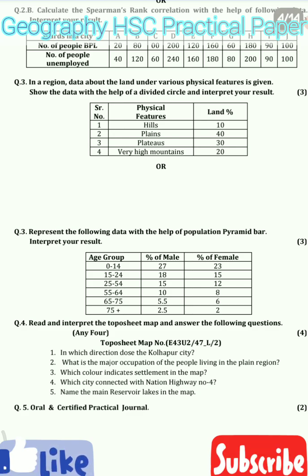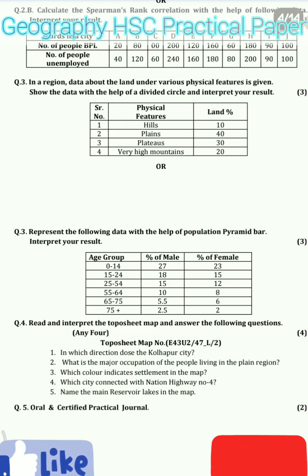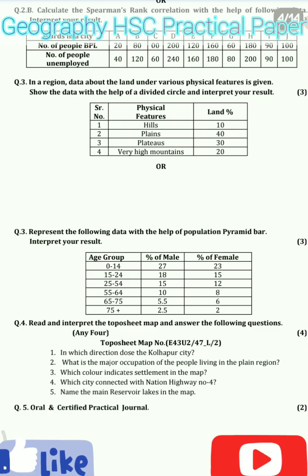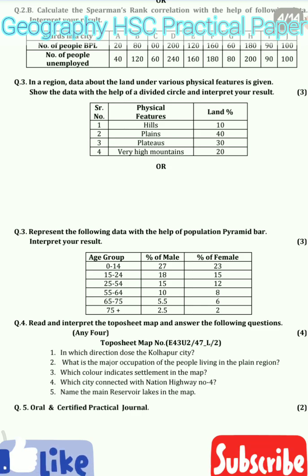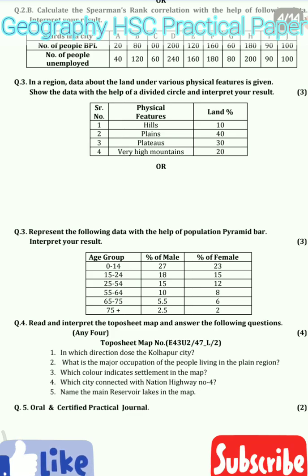And you have to write the answers for it. Below you can see there are total 5 questions, out of which aapko 4 questions ke answers sahi se dhene hai, and then only you will get total 4 marks. The sample questions given here are related to Kolhapur city — yeh saare questions ke answers aapko topo sheet ko dekhkar hi dhena hai.